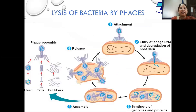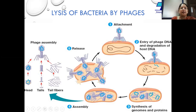A phage typically attaches very specifically onto a bacterial cell using the tail fiber — this is like a lock and key, so a phage against Vibrio can attach only to Vibrio. It then injects its DNA into the bacterial cell, and using the bacterial machinery the phage multiplies. The bacteria swell and the phages are released outside, which in turn attach to more and more bacteria. This cycle continues until the bacteria are eliminated — the bacteria are lysed, similar to how a bactericidal antibiotic works.